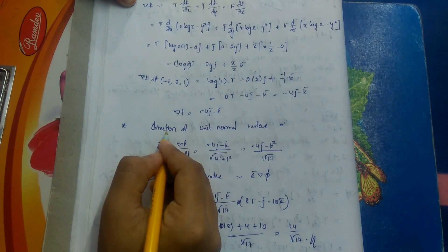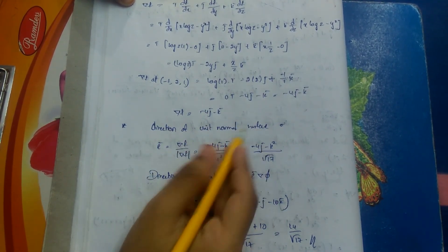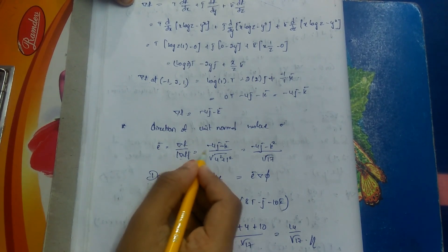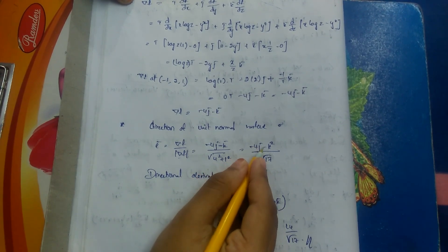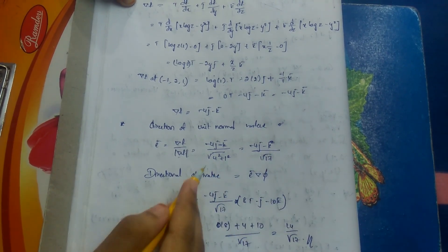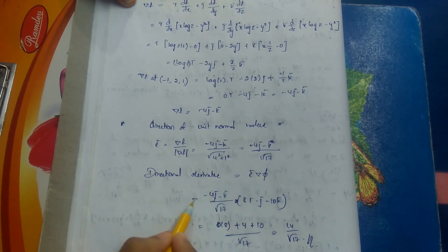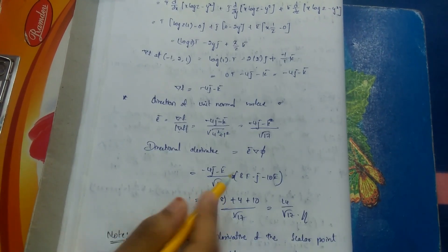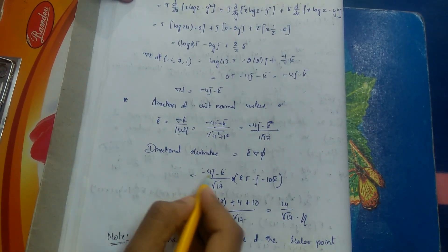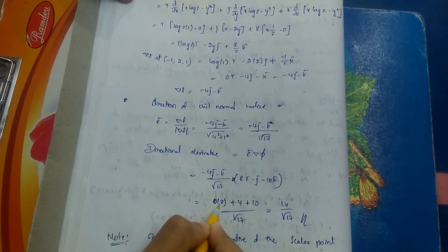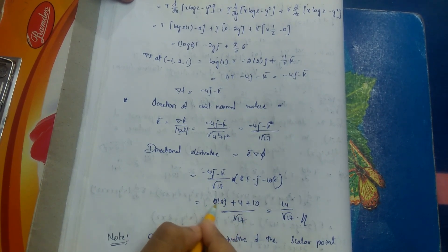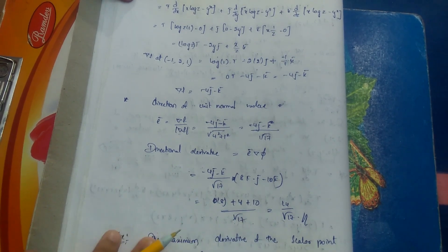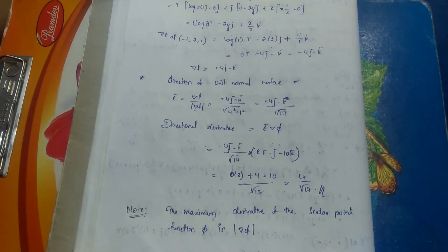The unit normal vector ē = ∇f / |∇f| = (−4j̅ − k̅) / √(16+1) = (−4j̅ − k̅) / √17. The directional derivative = ē · ∇φ = [(−4j̅ − k̅) / √17] · (8i̅ − j̅ − 10k̅). Since there is no i̅ term in ē, the i̅ contribution is 0. Result = [0 + (−4)(−1) + (−1)(−10)] / √17 = (4 + 10) / √17 = 14/√17.